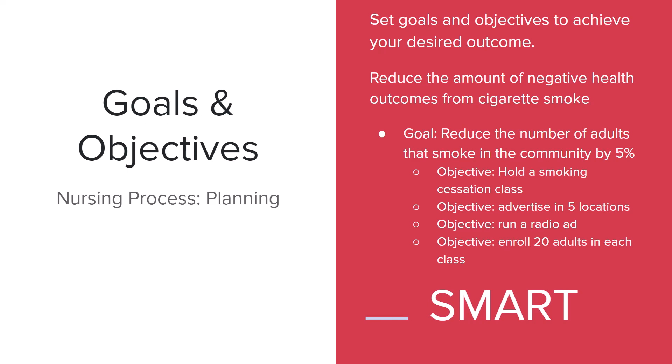Otherwise, the people who look at your funding request — which would be a grant — they're going to say this isn't specific enough. So for example, on the goal, you would want to say that you want to reduce the number of adults that smoke in the community by 5%, and then you would put a date. And on the objectives, you would also want to put dates — the date by which you're going to have met that objective. That tells people that you've got a really solid plan in place on how to do those things.